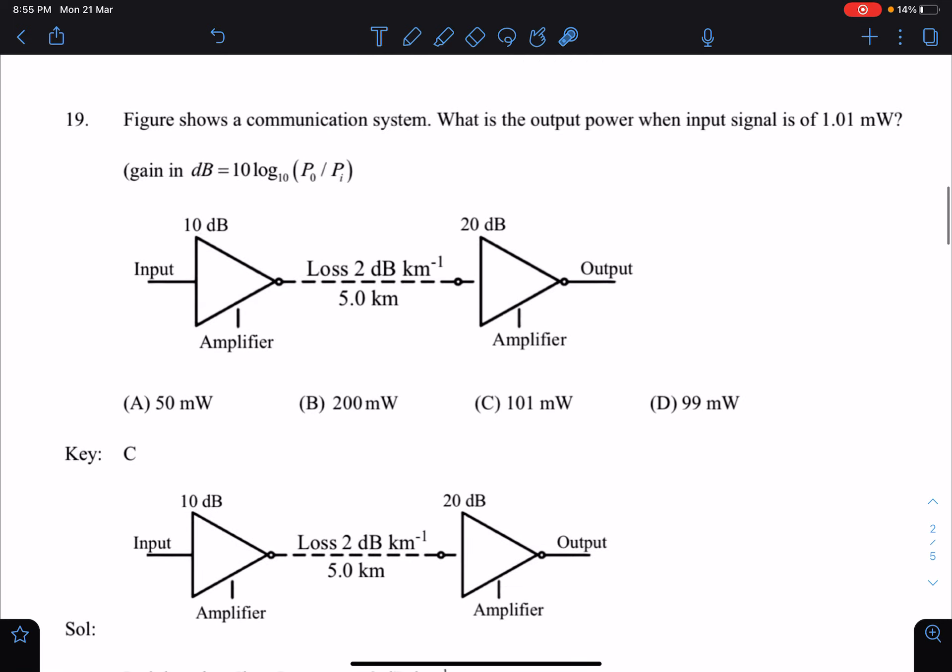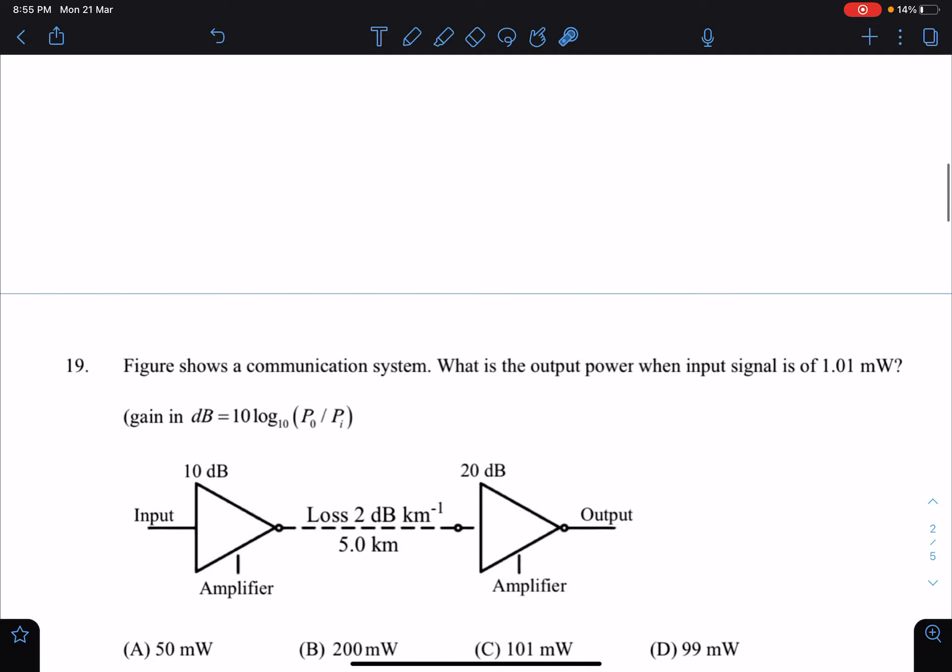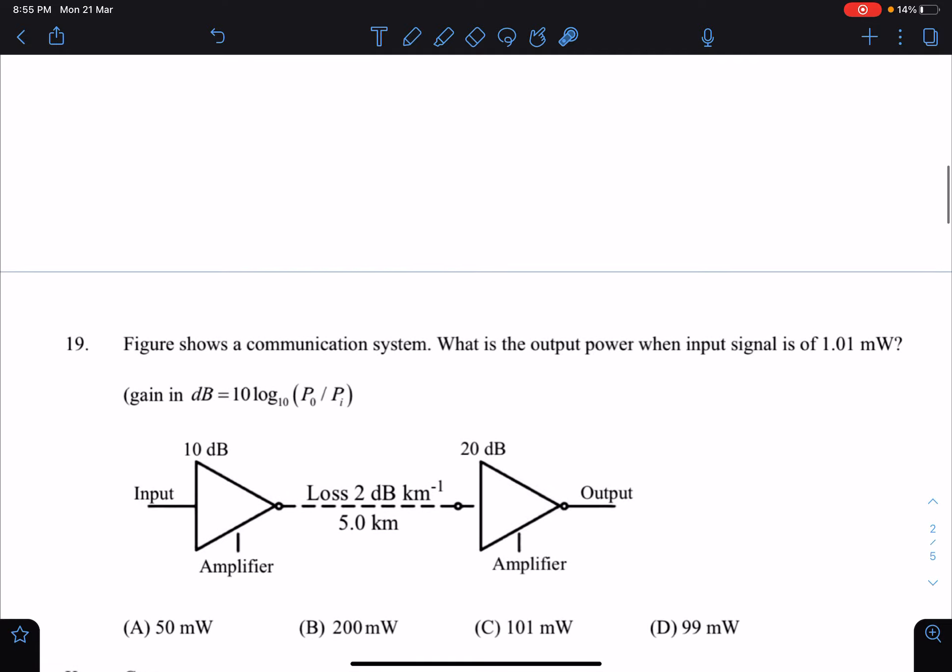Here is the problem statement - it was problem number 19. Figure shows a communication system. What is the output power when input signal of 1.01 milliwatts is given to the system? Here it is given that gain in decibels is 10...